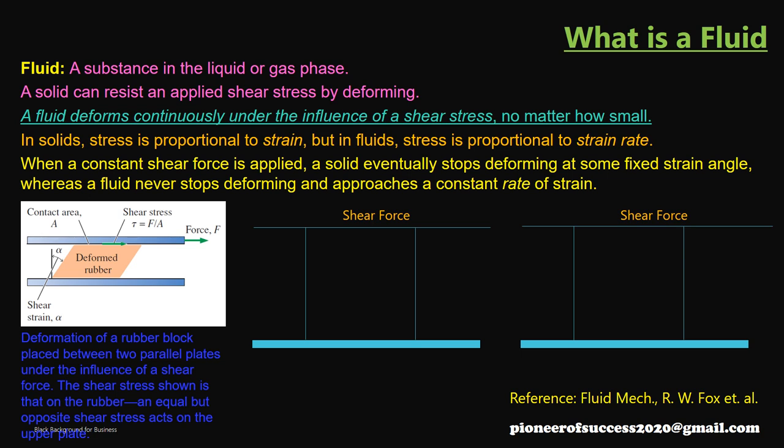In comparison, how does a solid behave? If we apply a shear stress to a solid, it will deform but it tends to come back once the shear stress is removed. For example, if we have a rubber block and apply a shear stress on the top surface, the rubber block will deform and come back to its original position once we remove the shear stress. That means for a solid, a strain occurs under stress and the strain reverses when the stress is removed — it returns to its original shape.